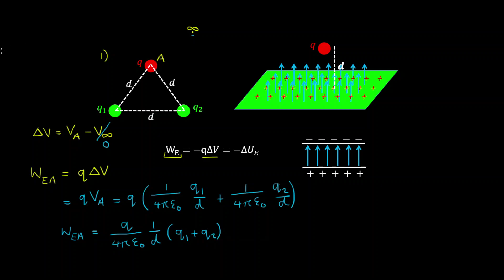Now suppose we want to calculate the work done by the electric field when a test charge Q is moved from point A to point B, which is halfway between Q1 and Q2. The work done by the electric field is equal to minus Q, the test charge, times the change in electric potential. This time our change in electric potential is equal to VB minus VA.